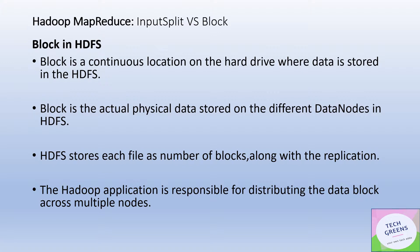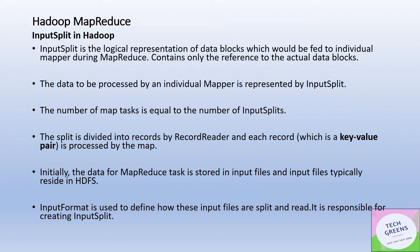If we talk about block in the HDFS Hadoop world, it's a continuous location on the hard drive where the data is stored in the underlying file system, which is HDFS. It is the actual data stored on different data nodes by the Hadoop system, and it is created when you try to store a file in HDFS. HDFS stores each file divided into a number of blocks along with replication — by default the replication factor is three. The Hadoop application is responsible for distributing the data blocks across multiple nodes, with metadata tracked in the NameNode. In summary, a block is the physical data — a chunk of a bigger file stored in HDFS.